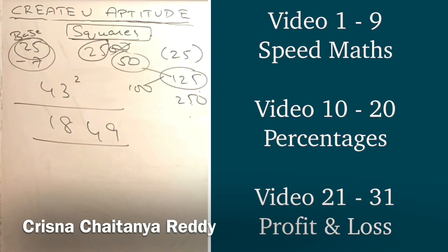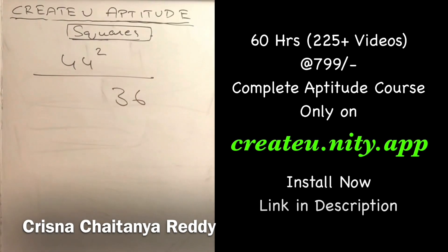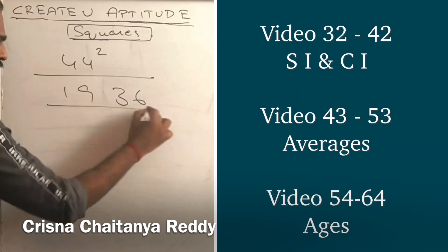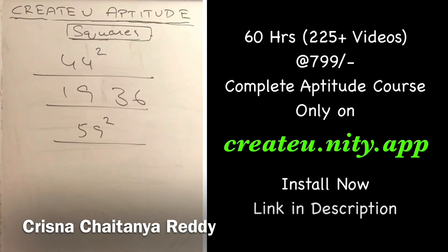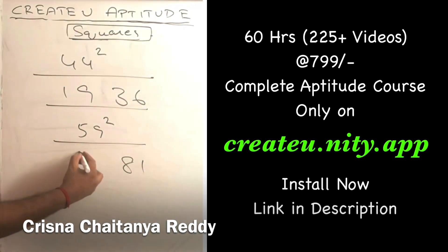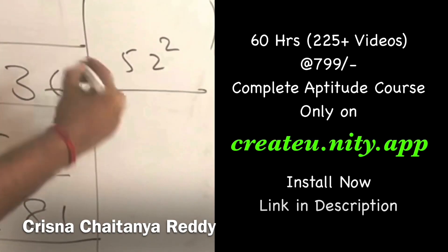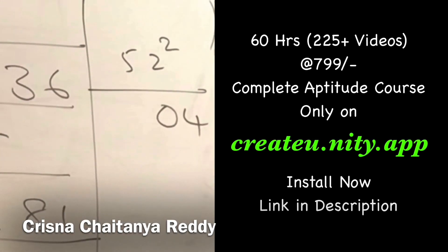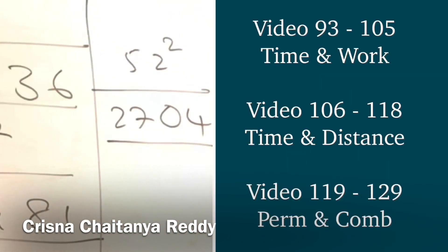Another example: 44 squared - 6 close to 50, 6 squared is 36, 6 less than 50, so 25 minus 6 is 19. Answer: 1936. For 59 squared: 9 close to 50, 9 squared is 81, 9 more than 50, so add to 25: 25 plus 9 is 34. Answer: 3481. For 52 squared: 2 more than 50, 2 squared is 04, 25 plus 2 is 27. Answer: 2704.